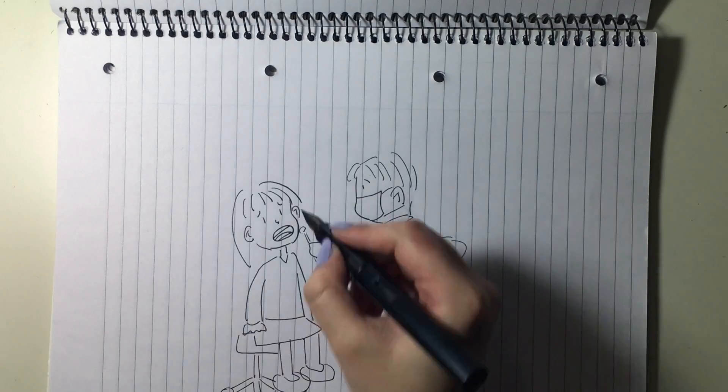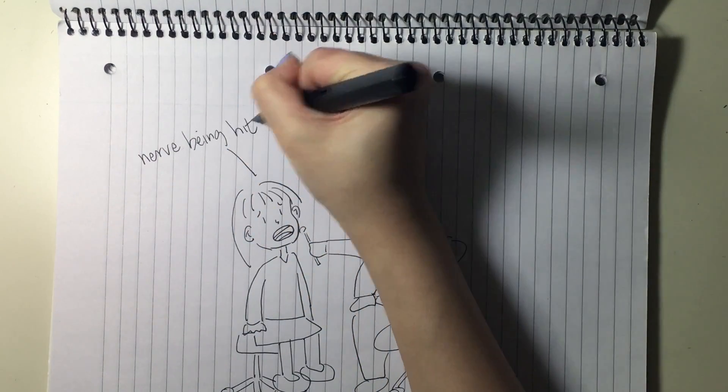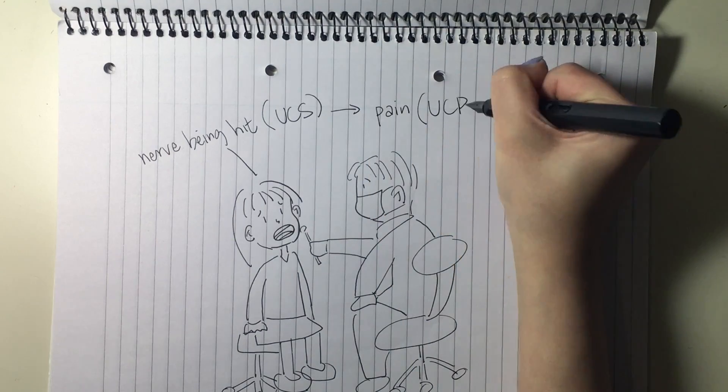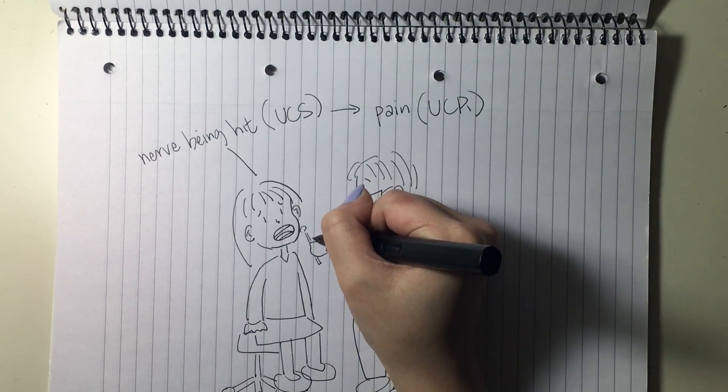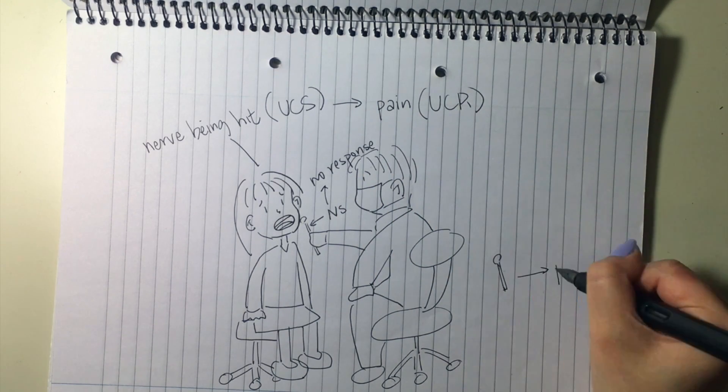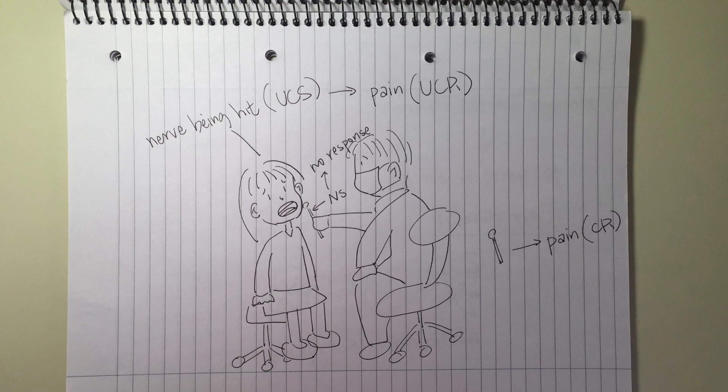For example, when seeing a dentist, the nerve being hit is the unconditioned stimulus, which leads to pain. At this point, the drill, which is the neutral stimulus, leads to no response. But during conditioning, the drill is associated with the pain after the nerve is hit, so it becomes a conditioned stimulus, leading to pain, which is now the conditioned response.